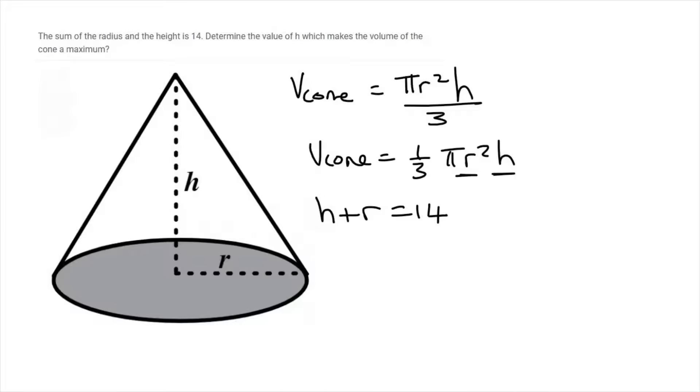Now, usually in the exam, they'll guide you on which one to get by itself. But look here, they say determine the value of h. So at the end, they would like us to have h. So we don't have to get h alone first. We could get r and then find h later.